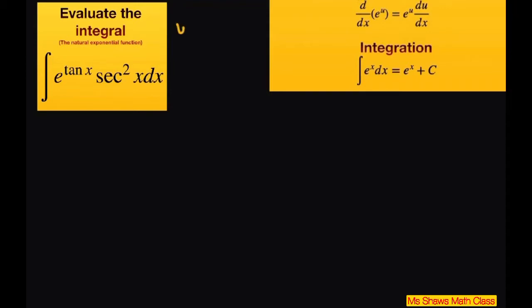So if we have u equals tan of x, then the derivative of u equals secant squared of x dx.